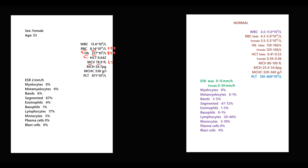The higher the red blood cell count, the higher the hematocrit. The next value is platelets — platelets are 871, which is significantly higher than normal. So for now we have very high hemoglobin level, red blood cell count, and hematocrit, and also elevated platelet count.